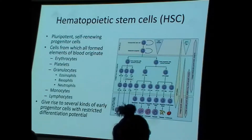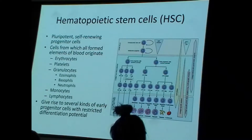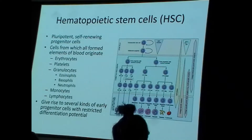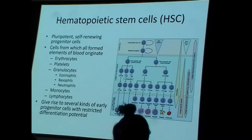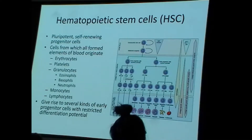We know the formed elements of the blood. It's important to remember that a single stem cell is not directly responsible for producing all the formed elements of the blood — it's like administration or bureaucracy, with different progenitor cells underneath doing the specific work.